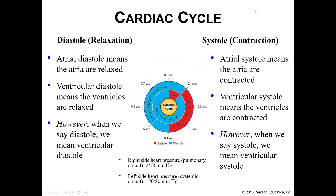Now, the cardiac cycle itself. We have two words we're going to hear over and over as we talk about the cardiac cycle: diastole and systole. Diastole is relaxation and systole is contraction. Both your atria and your ventricles will relax, and both will contract. However, if we just say diastole or systole without being specific, we are talking about ventricular diastole and ventricular systole.